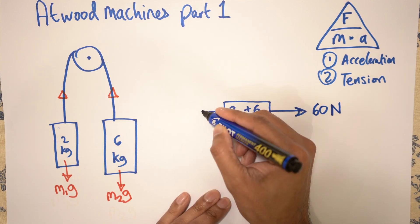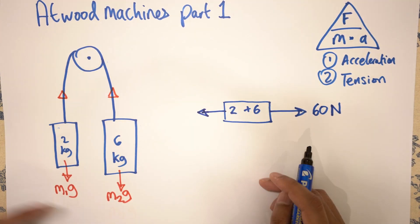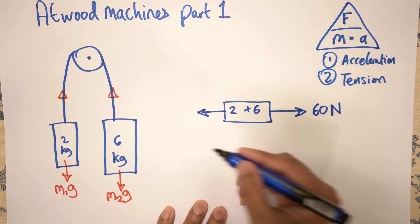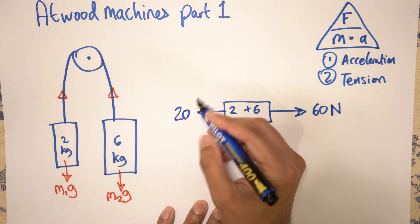And on the other end, you've got 2, which is the mass, times g, which is 9.8 or 10. So let's make it easy. Let's call it 10. 2 times 10 is 20 newtons.